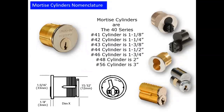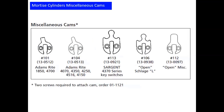We do offer optional cams. Here we have the 101 option for the Adams Rite 1850 lock set, and 104. We offer a larger cloverleaf cam for our 4370 key switches. We offer a 106 cam option when using our cylinders in the Schlage L9000 series lock, and the 112, which was used in very old black cast iron Sargent locks made prior to 1961. Yet today those cams are often used in key switches and in gates.